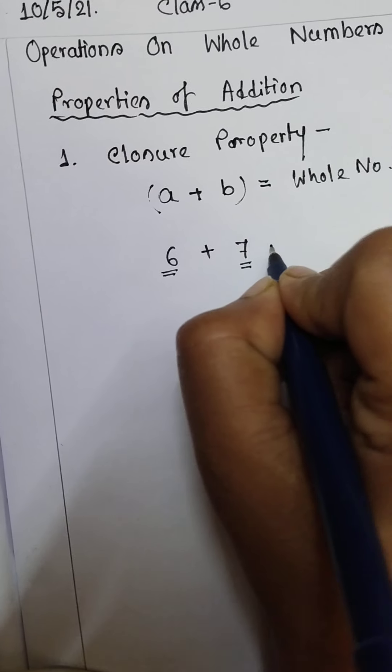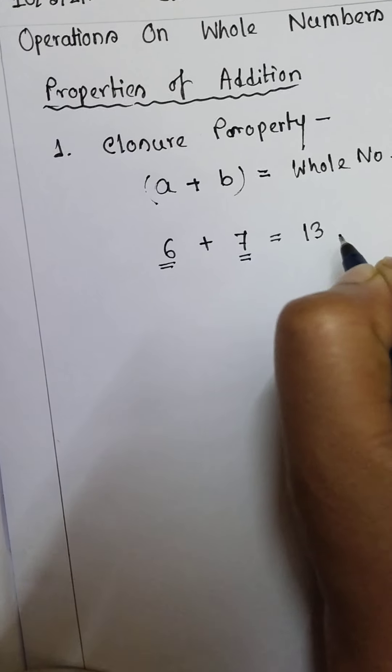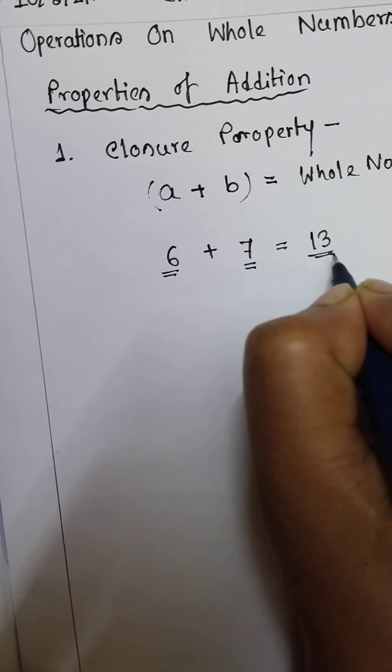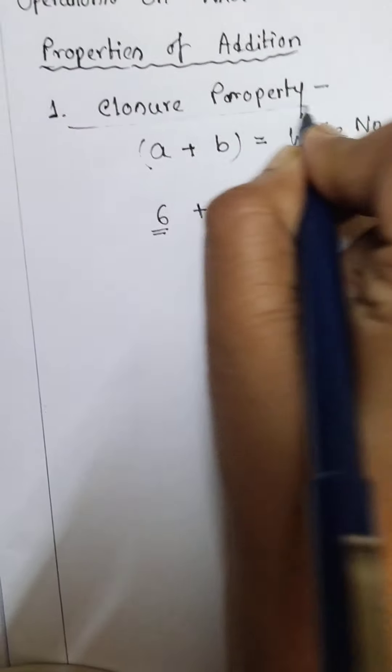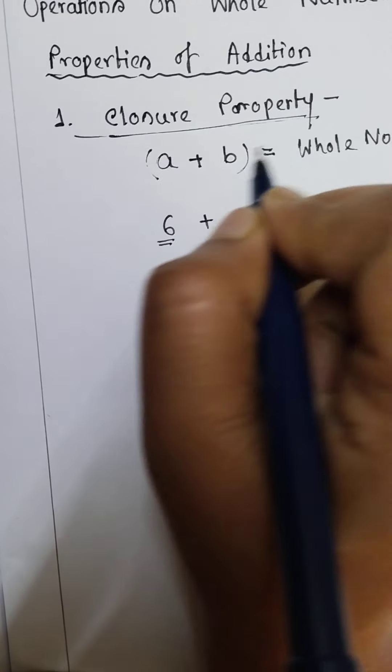If we add 6 plus 7, we will get 13. So this is also a whole number. This is the closure property of addition.